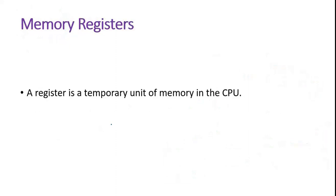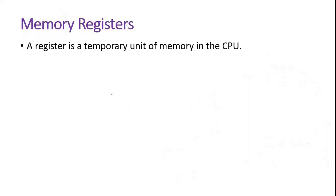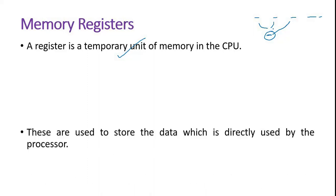Finally, in the CPU, we have memory registers. These are temporary units. As said earlier, if you want to add five numbers, you do not want the intermediate results — only the final result should be fed to the output unit. The intermediate result is overwritten as the next number is added. So this is basically a temporary unit; memory registers are temporary units.